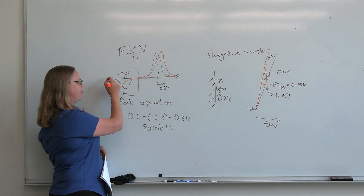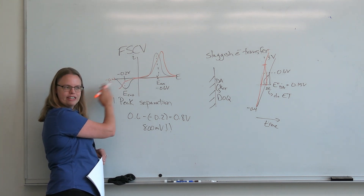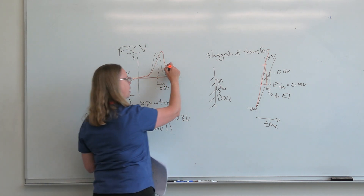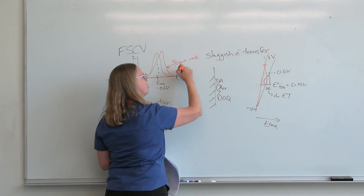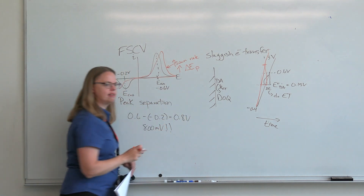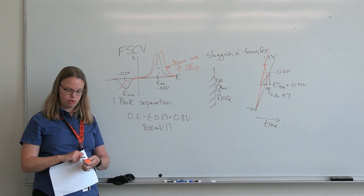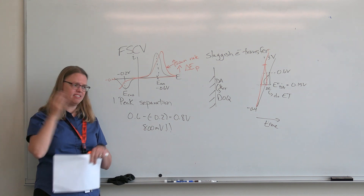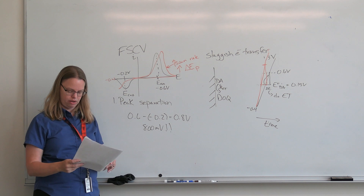If I'm only scanning down to minus 0.4V, that means the peak is actually not even being fully captured — I can't see it. So peaks shift with scan rate: a higher scan rate gives you a higher delta E peak. That's one of the reasons we don't go at screaming fast scan rates — all the peaks shift out, and it's hard to fit them within our given potential range.